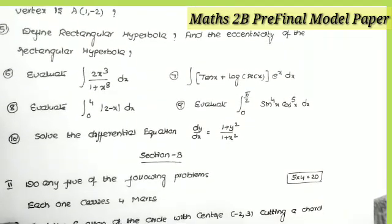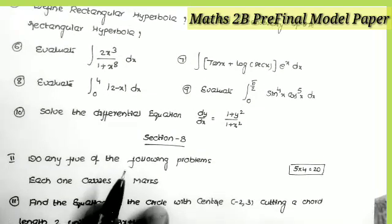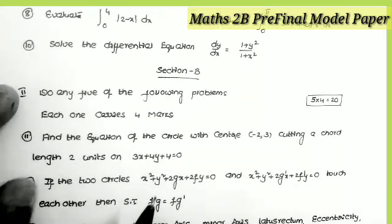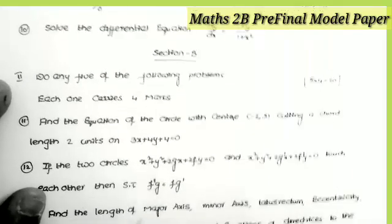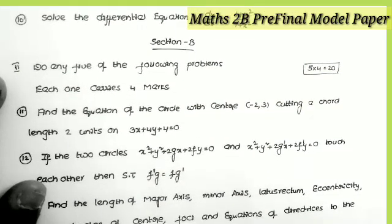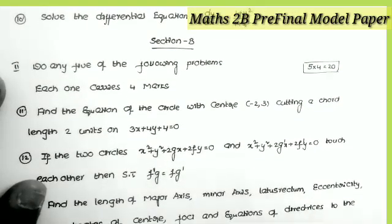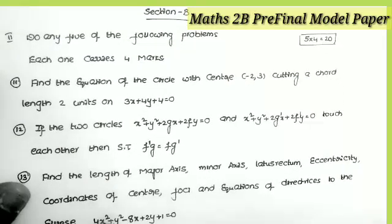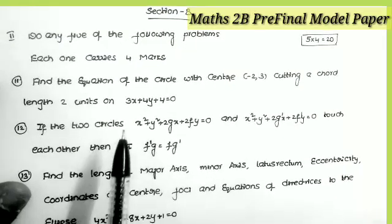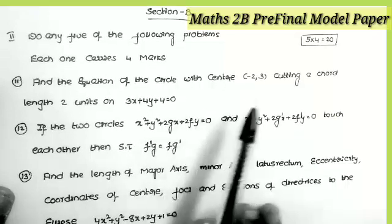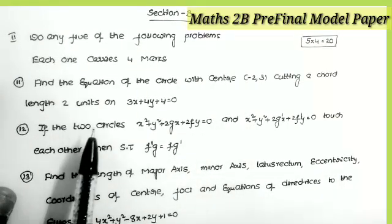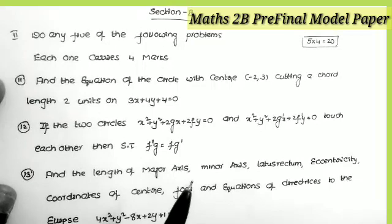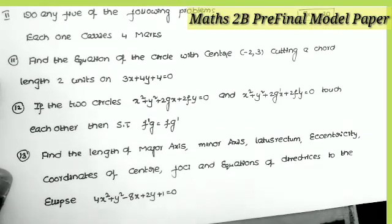These are the two-mark questions. Now let us see the four-mark questions. Section B — you have to attend only five questions and each one carries four marks. The first question is from the topic circles: find the equation of the circle with center (−2, 3) and cutting a chord of length 2 units on the line 3x + 4y + 4 = 0.